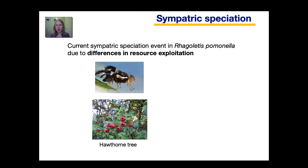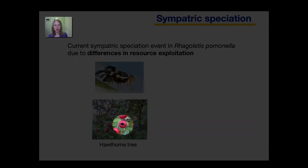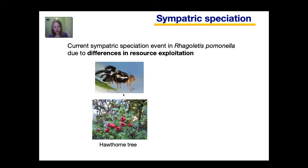Now we will take a look at sympatric speciation due to differences in resource exploitation. A great example is an ongoing sympatric speciation event in Rhagoletis pomonella, commonly known as the apple maggot fly. These flies are native to North America, and in the past they would only feed on hawthorn fruits. These flies lay their eggs in the hawthorn fruit, the eggs develop into maggots which feed on the fruit and gradually develop into flies, which then mate and lay new eggs in the hawthorn fruit, and the life cycle continues.